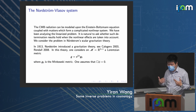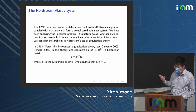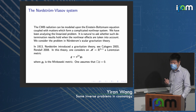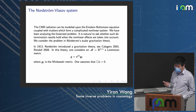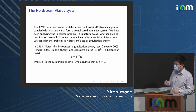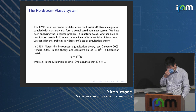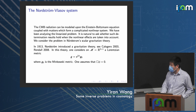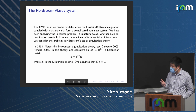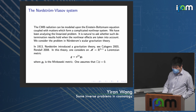The actual CMB radiation can be modeled upon the Einstein-Boltzmann equation coupled with matter fields, yielding a highly complicated nonlinear system. Given the linear results, it is natural to ask whether the determination result holds in the nonlinear theory. Since we have been considering scalar perturbation, the natural starting point for the nonlinear problem is Nordström's scalar gravitation theory. This theory is not exactly physical but is often used as a test model for Einstein-Vlasov equations. In 1913, Nordström introduced this gravitation theory: consider M = R^(3+1) with a Lorentz metric conformal to Minkowski, so g = e^(2φ) g₀, and φ satisfies the wave equation □φ = 0.